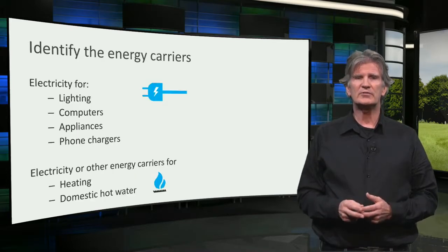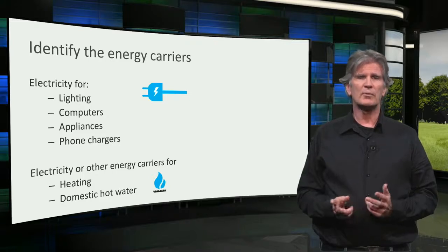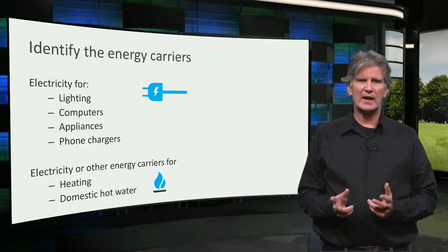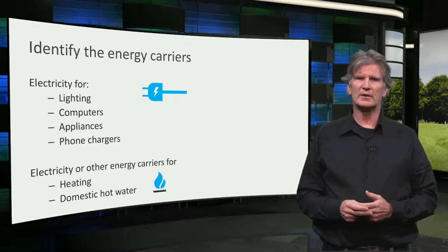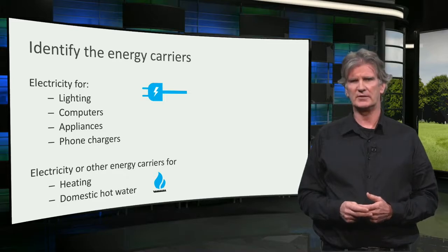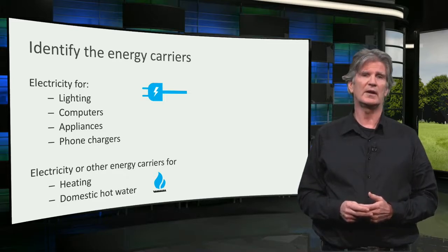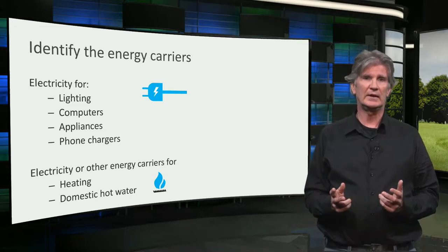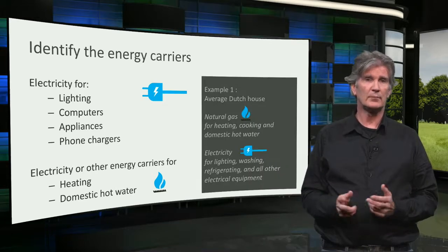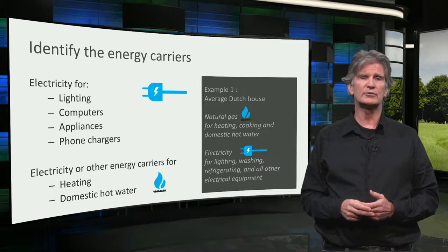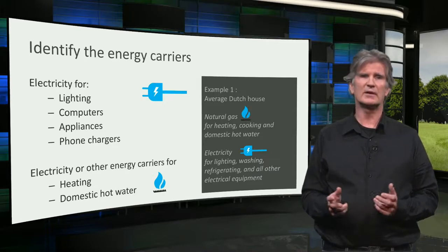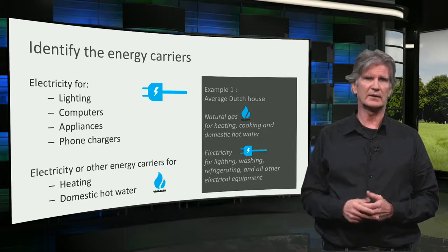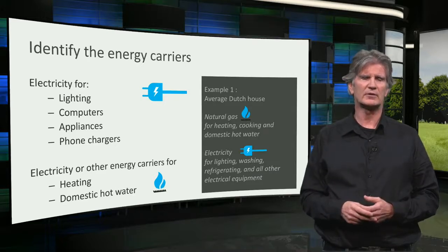Now you have to find which energy carriers are used for your building. The first one is always electricity — virtually every building uses electricity for lighting, computers and other appliances. Sometimes electricity is the only energy carrier, but most of the time there is an additional energy carrier for heating and cooking. For example, an average Dutch house uses natural gas for heating, cooking and domestic hot water, and electricity for lighting, washing, refrigerating and all other electrical equipment.